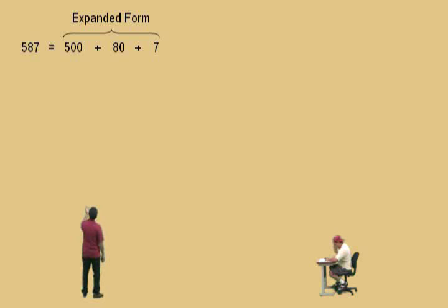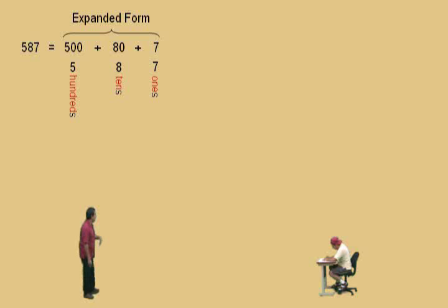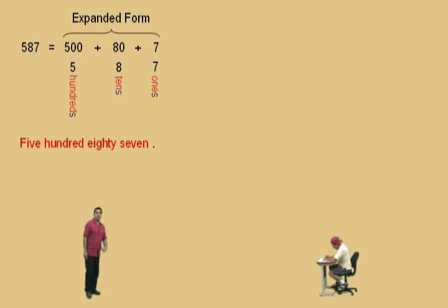Now, why do we have five hundreds? Because the five was in the hundreds place. Similarly, the eight was in the tens place, and the seven was in the ones place. And so, how do we say this number, Charlie? Five hundred and eighty-seven. Okay, let's do a tougher one.